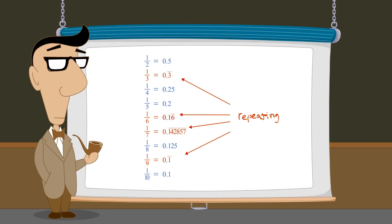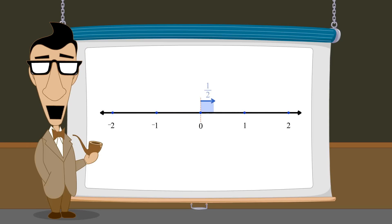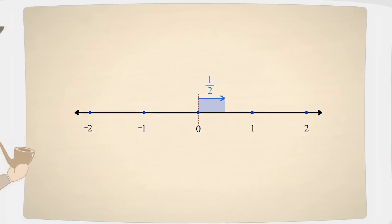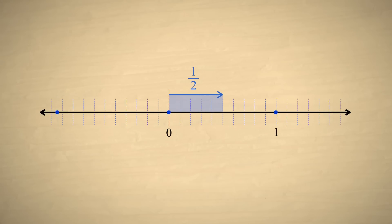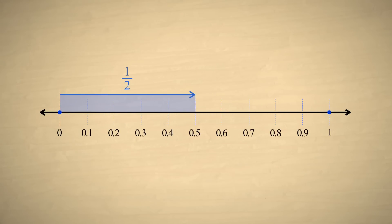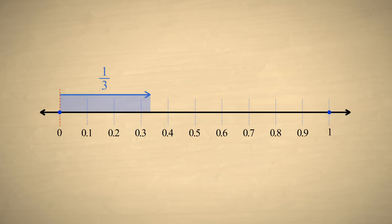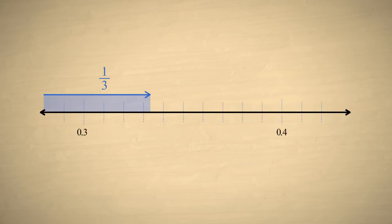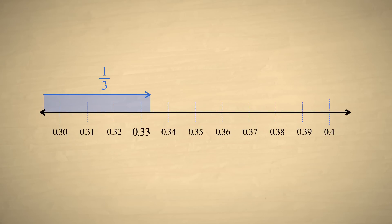You may be wondering why some fractions can be represented with a finite number of digits, while others cannot. To see why, let's take a look at the fraction one-half on the number line. One-half can be represented by exactly five-tenths, so one-half is equivalent to the decimal number 0.5. On the other hand, the fraction one-third is larger than three-tenths, but smaller than four-tenths. If we subdivide these divisions into hundredths, we see that one-third falls somewhere between thirty-three-hundredths and thirty-four-hundredths.